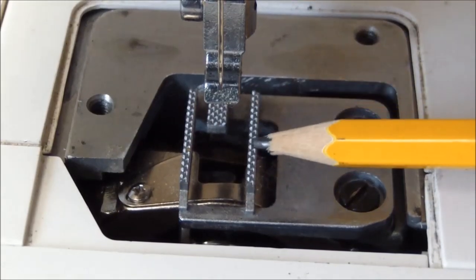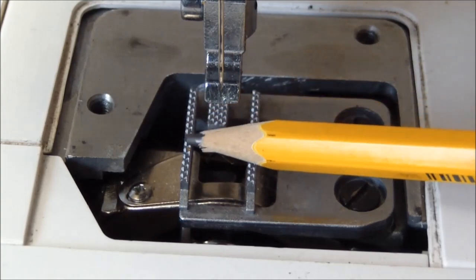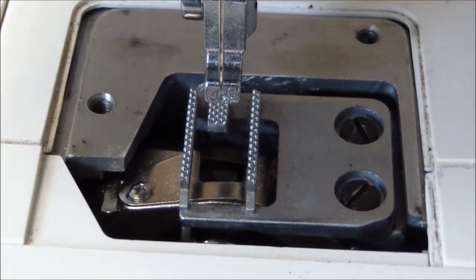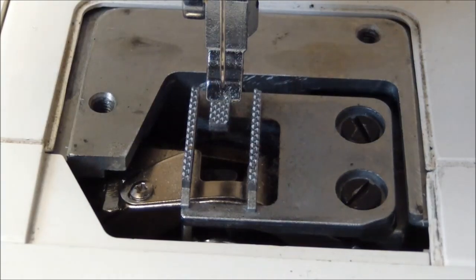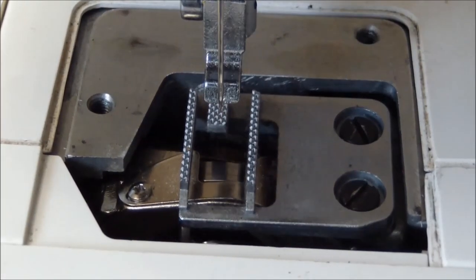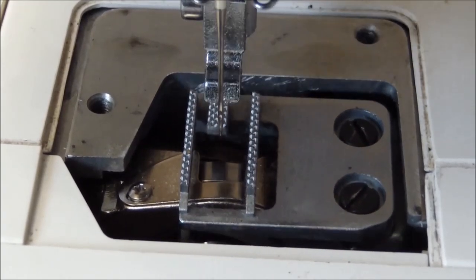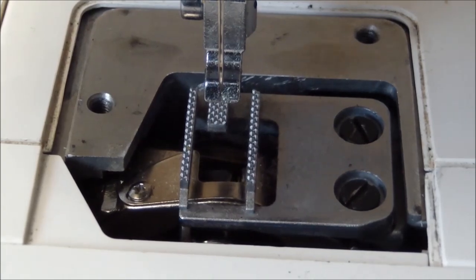Feed dog should not be worn out or blunt. Take a magnifying glass, and check its condition. The teeth of feed dog should rise about 1 mm above the needle plate.